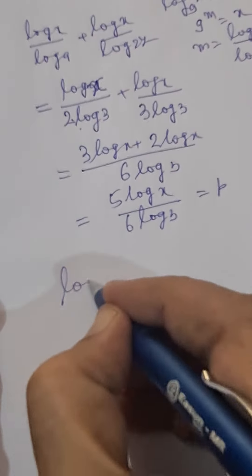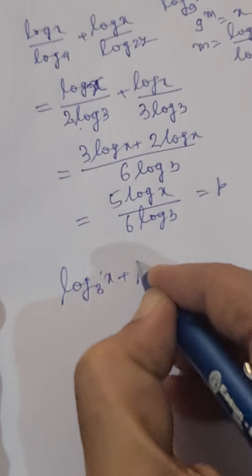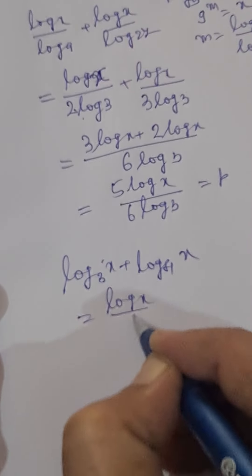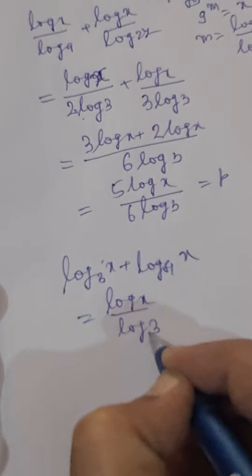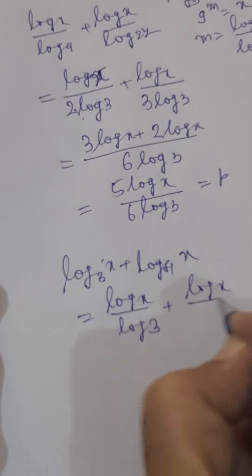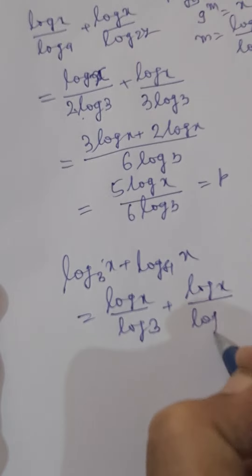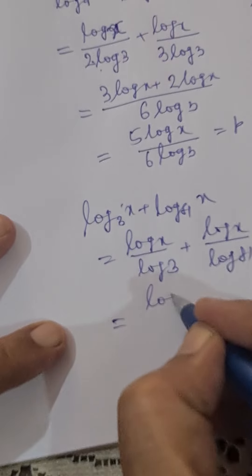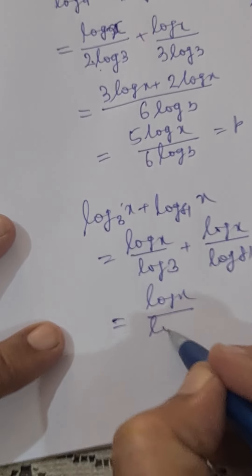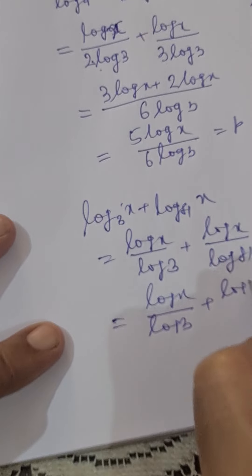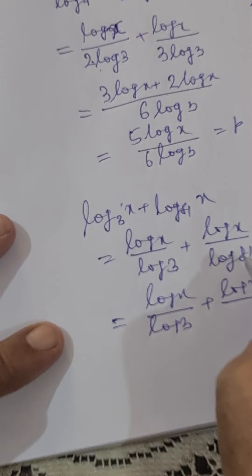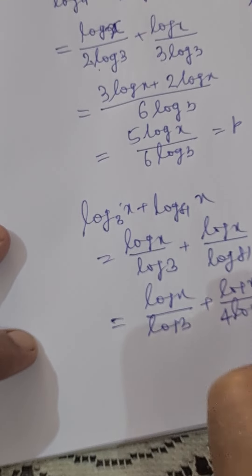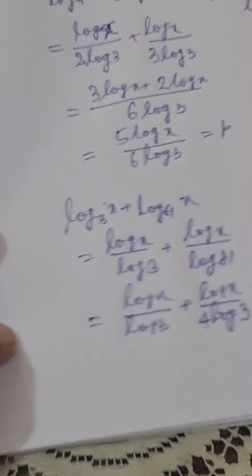Now we will manipulate the target equation: log₃x plus log₈₁x. This we can write as log x divided by log 3, plus log x divided by log 81. Since 81 is 3 to the power 4, log 81 equals 4 log 3.